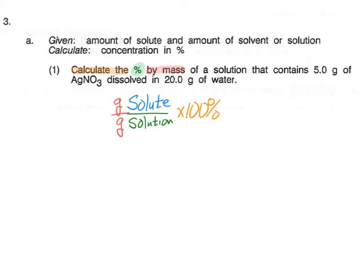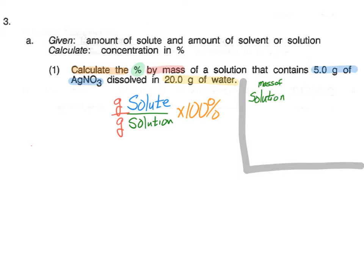Let's read the question carefully. This solution contains 5 grams of silver nitrate (AgNO₃) and 20 grams of water. We need to identify the solute, solvent, and solution. The 5 grams of AgNO₃ is the solute, and the 20 grams of water is the solvent. The mass of the solution equals the mass of the solute plus the mass of the solvent: 5 grams plus 20 grams gives us 25 grams of solution.